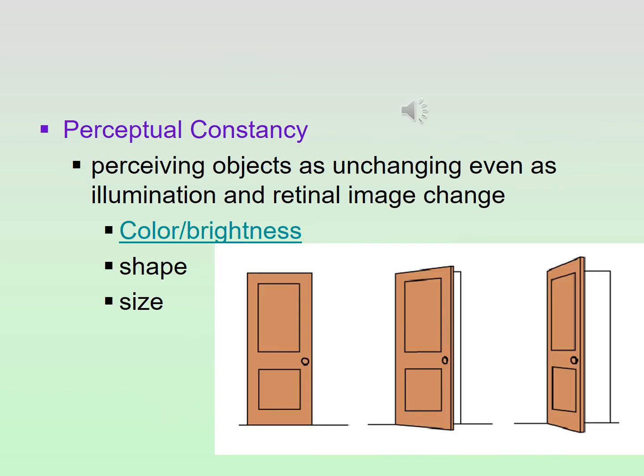With the concept of perceptual constancy, sometimes we perceive things as unchanging even if the retinal image changes. There are three examples. First, shape constancy: a door is obviously a rectangle, but when you open the door, you still perceive it as a rectangle even though the image has changed on your retina. You don't look at it and say 'that's a trapezoid' — you still perceive it as a rectangle.